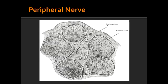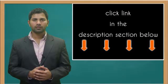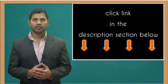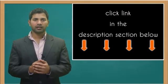What does the prefix endo mean? The prefix endo means inner. What does the prefix peri mean? The prefix peri means around. What does the prefix epi mean? The prefix epi means outer.